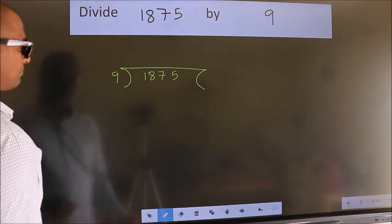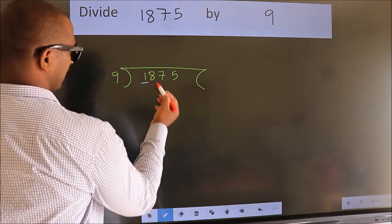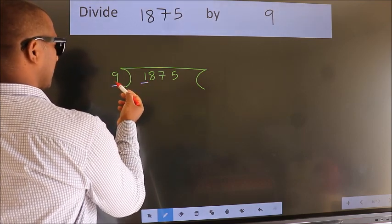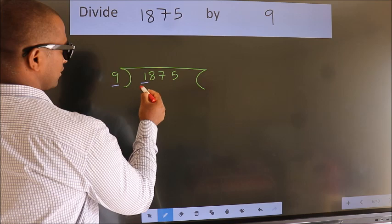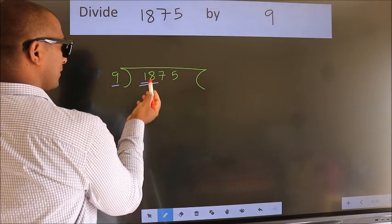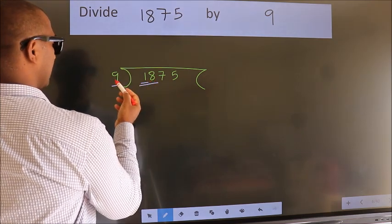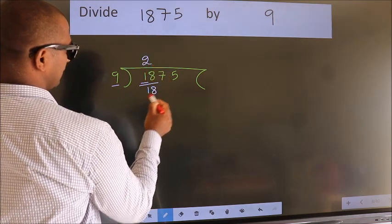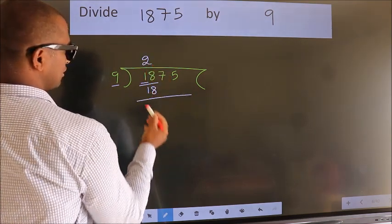Next. Here we have 1. Here 9. 1 is smaller than 9. So we should take two numbers, 18. When do we get 18? In the 9 table. 9 twos, 18. Now we should subtract.